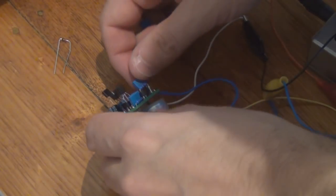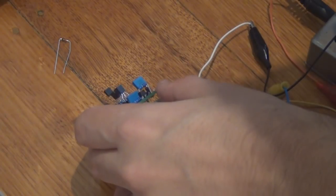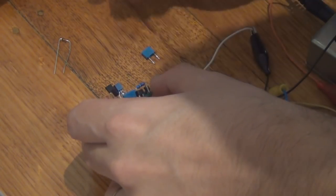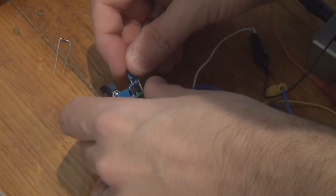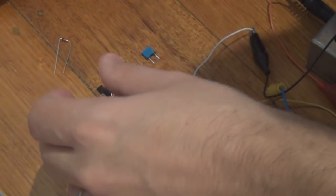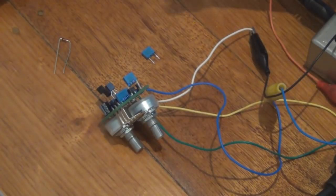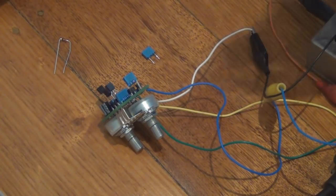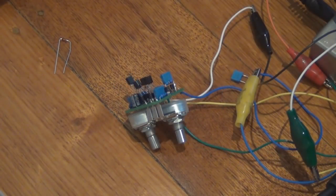So by modifying C2 we can increase or decrease the bass. By putting in a lower value capacitor in C2 you'll end up with a less bassy sound. So this is what it sounds like with one nanofarad.